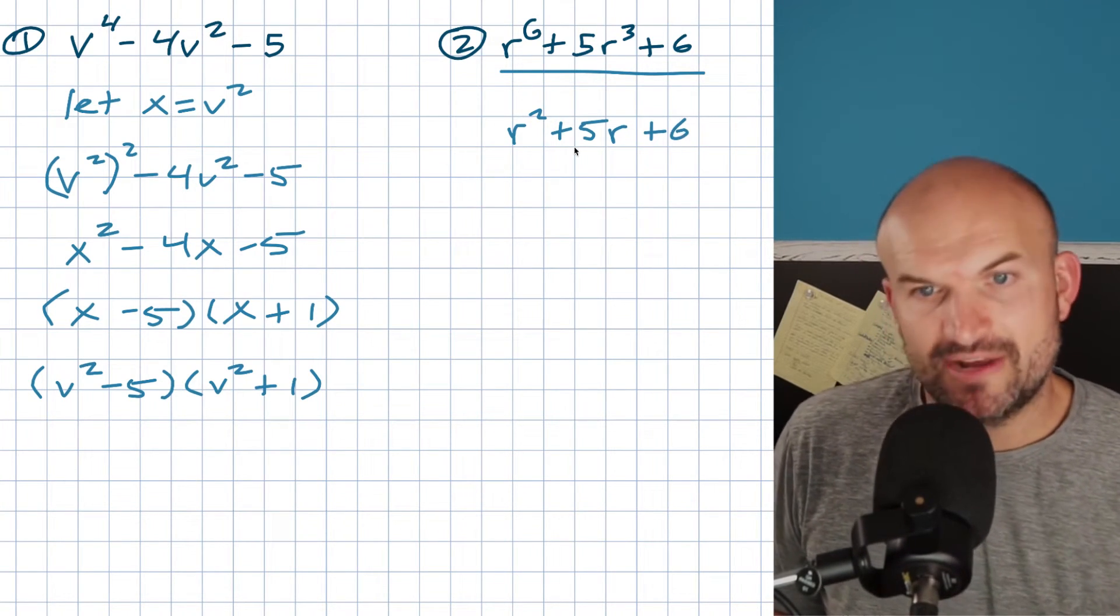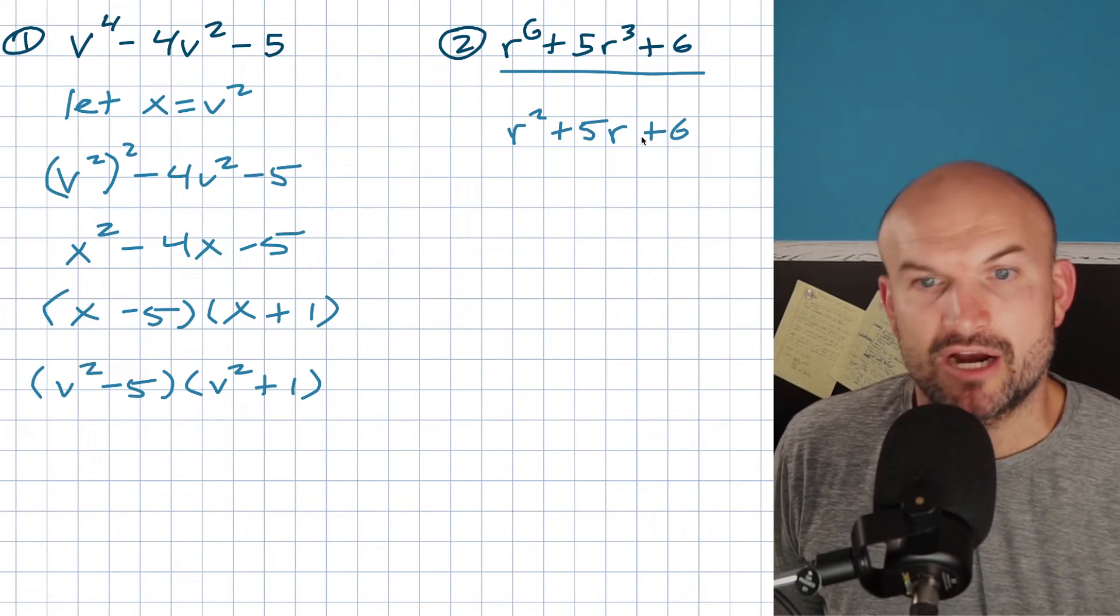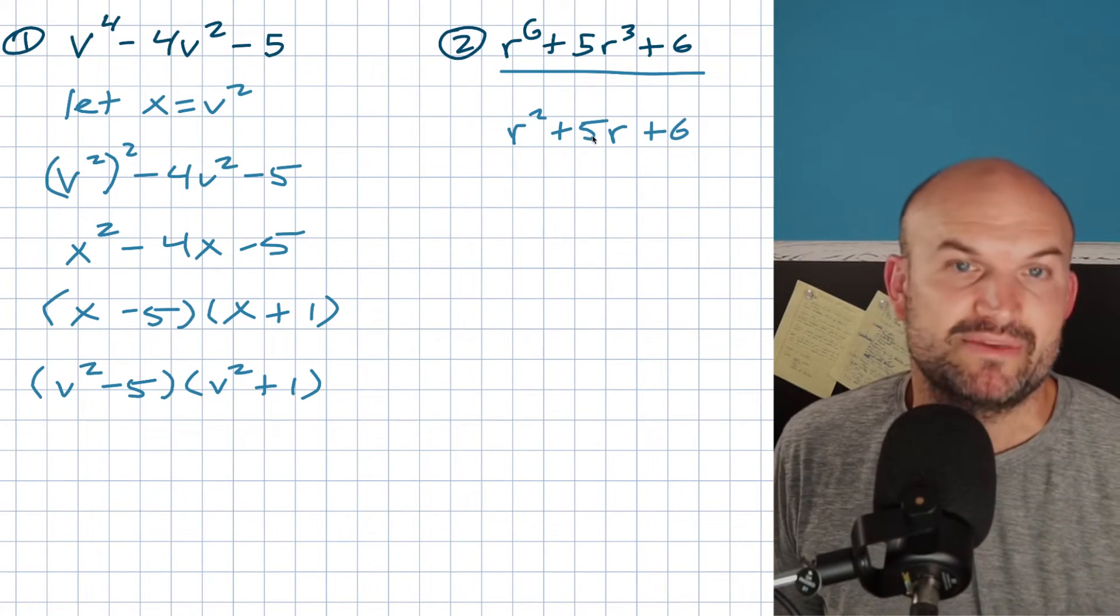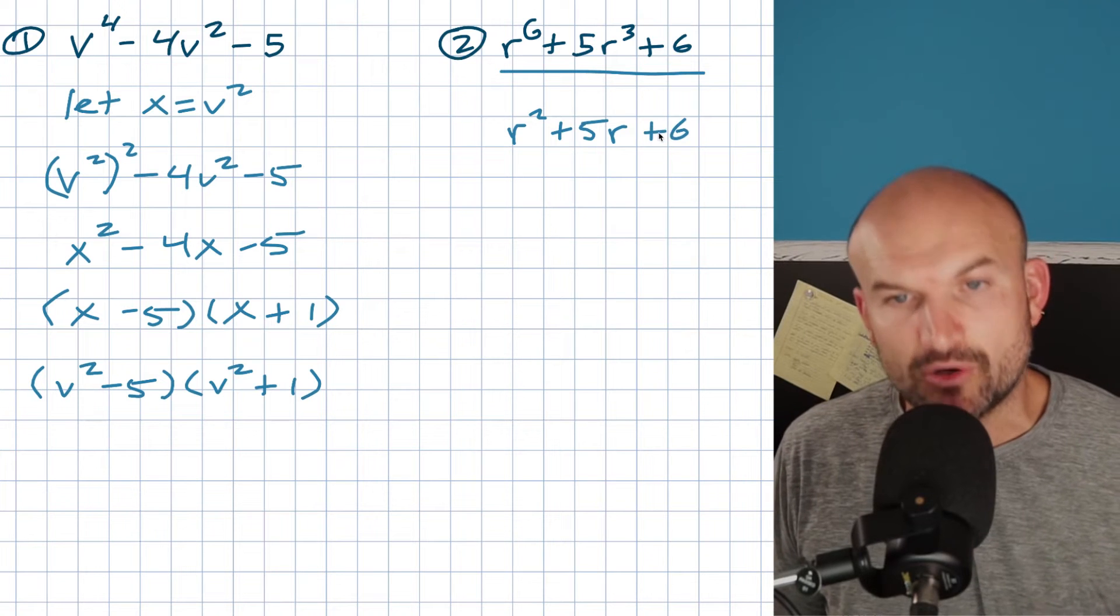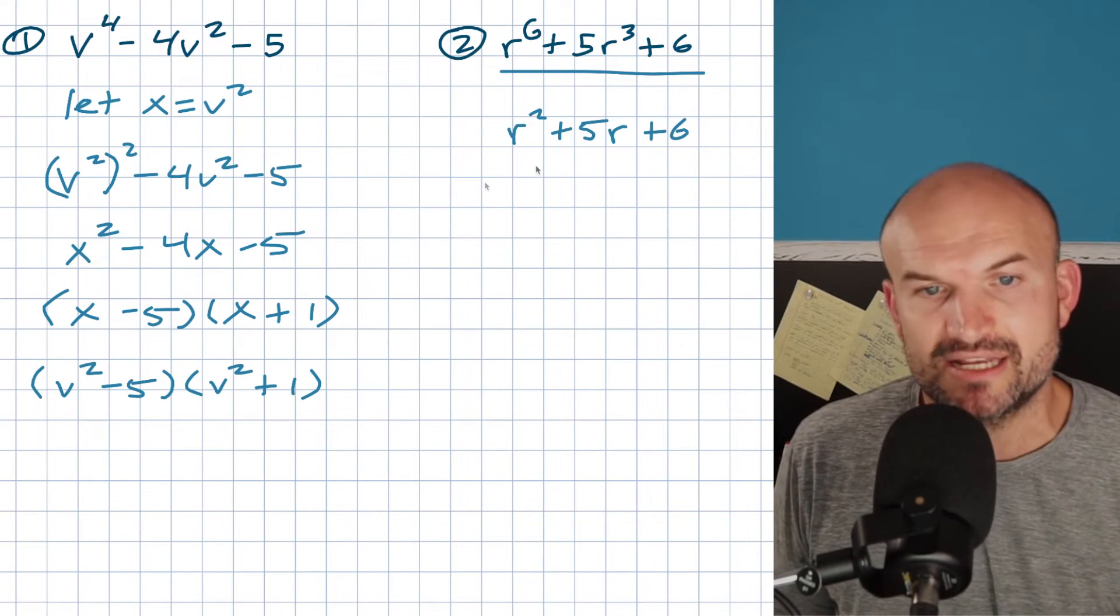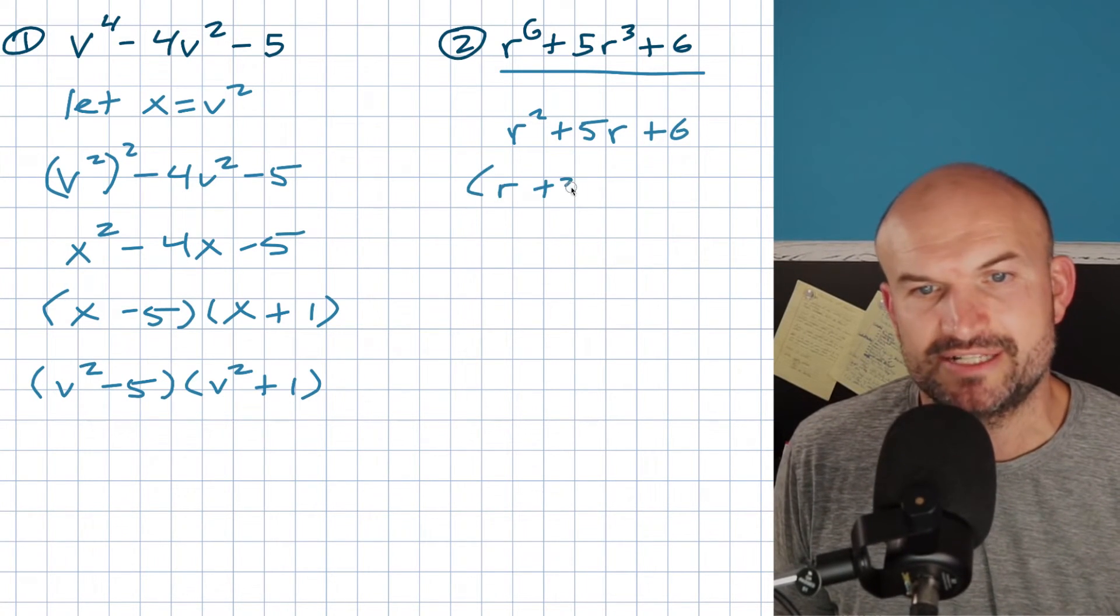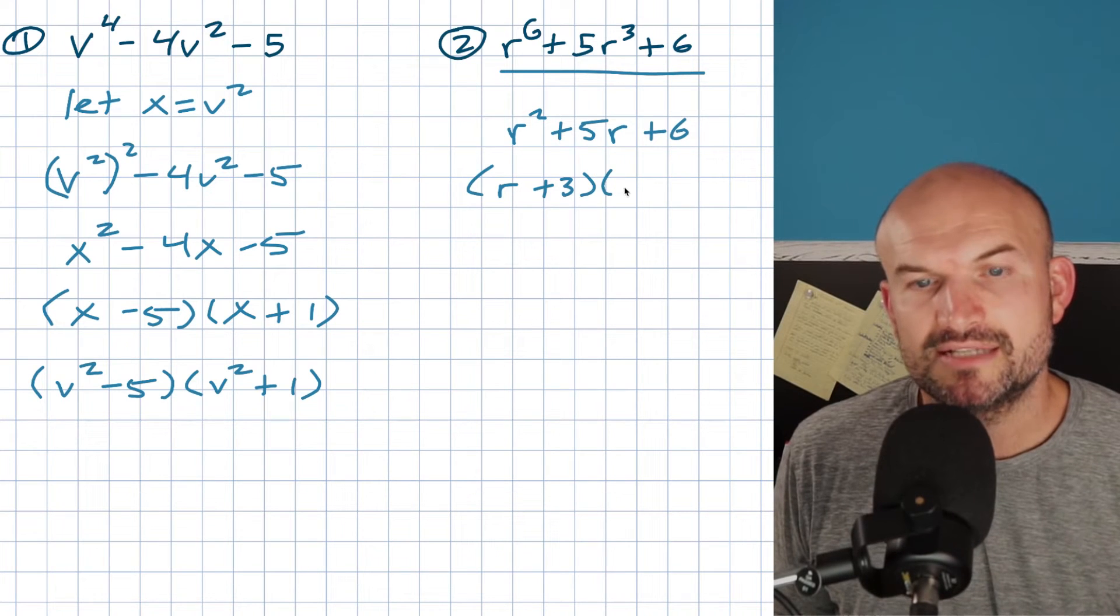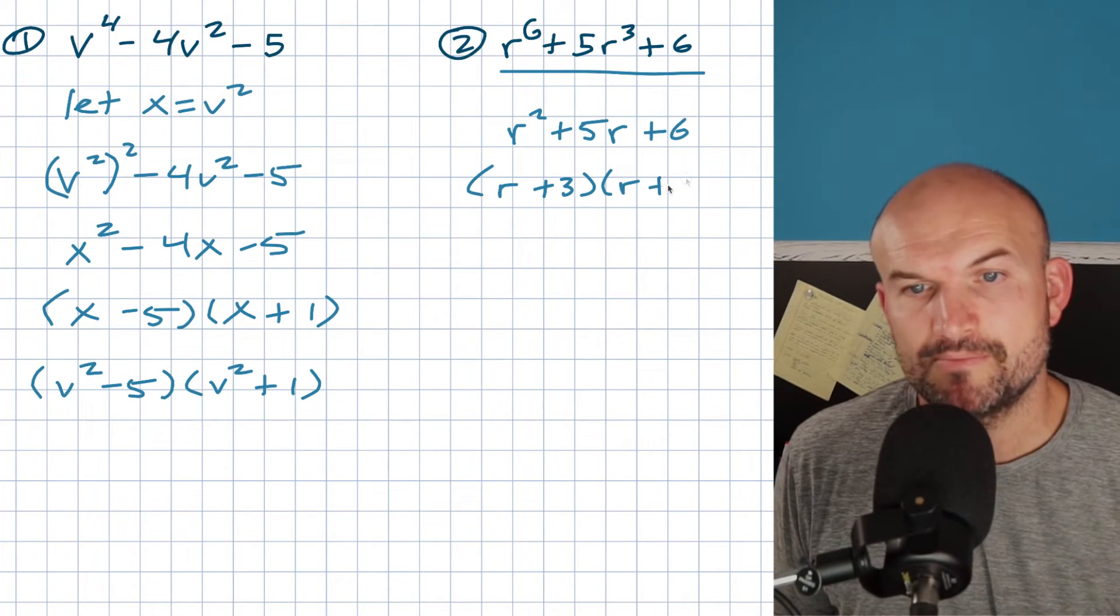Now, if I was going to go ahead and factor this, I'd say what two numbers multiply to give me 6, add to give me 5? They both have to be the sum of the factors, both have to be positive. Hopefully you recognize, this is kind of an easy factor problem: r plus 3 times r plus 2.